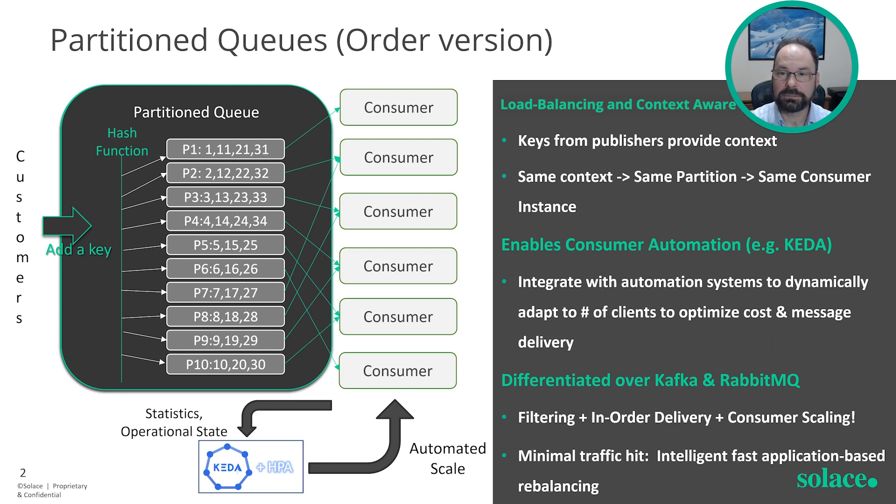Traffic only stops on partitions that are going to be rebalanced, and only for a short time. All the others keep moving. In summary, partition queues on PubSubPlus provides filtering of events, in-order processing, dynamic consumer scaling, and intelligent fast rebalancing — all in one. You won't get that with any other solution.